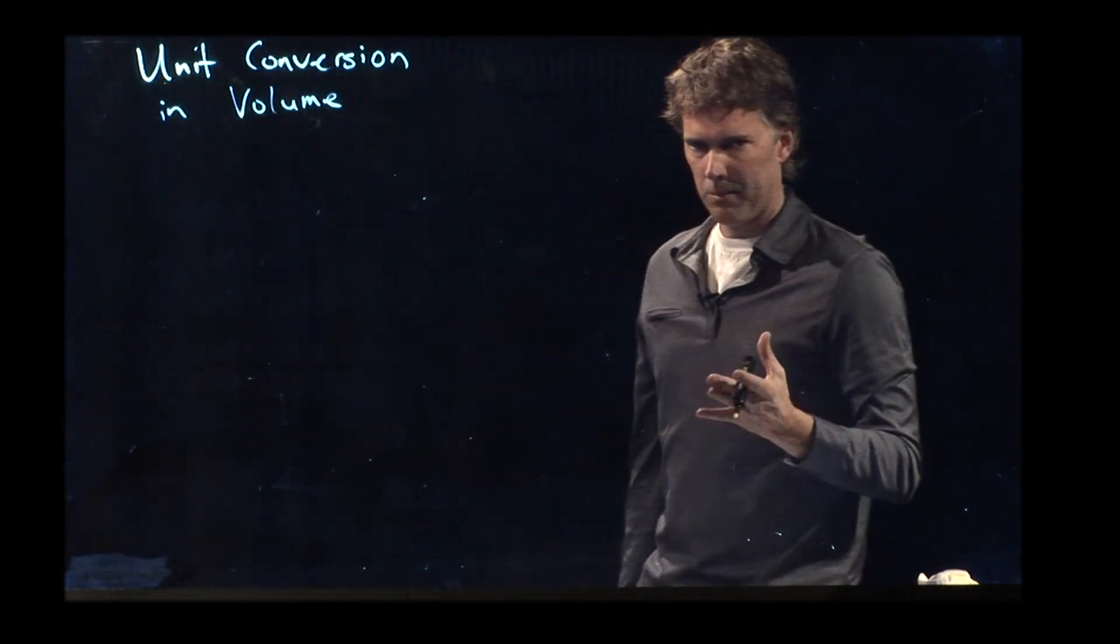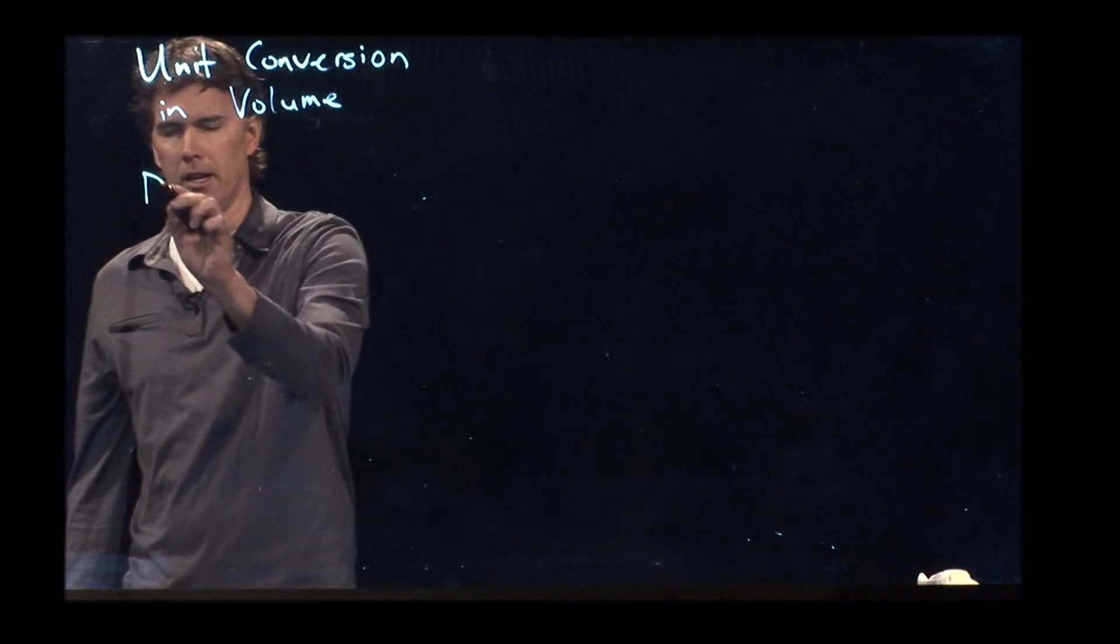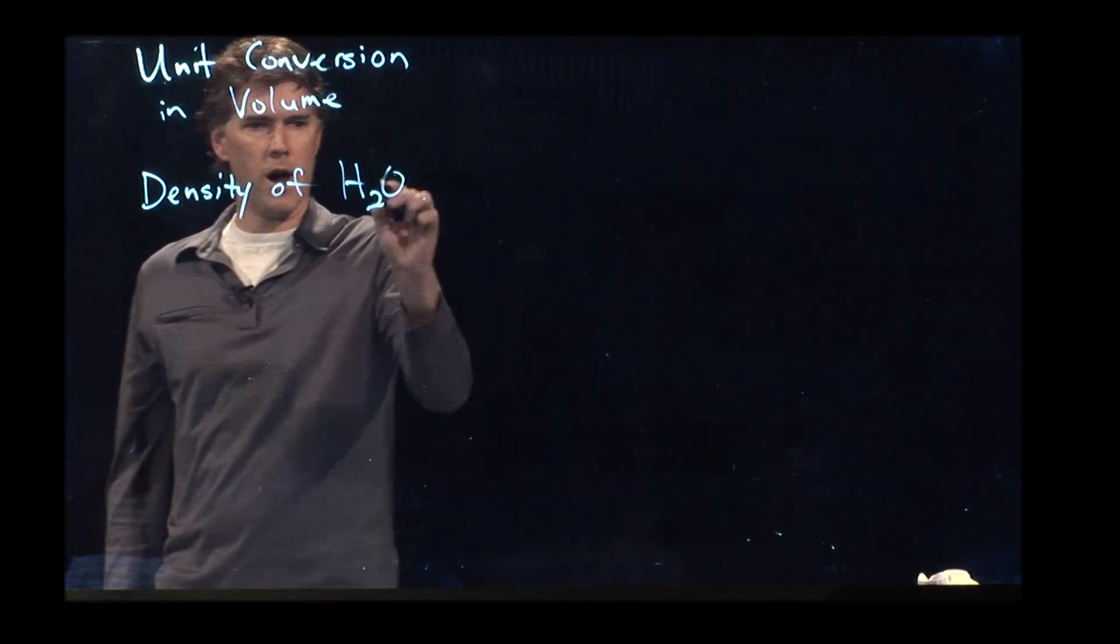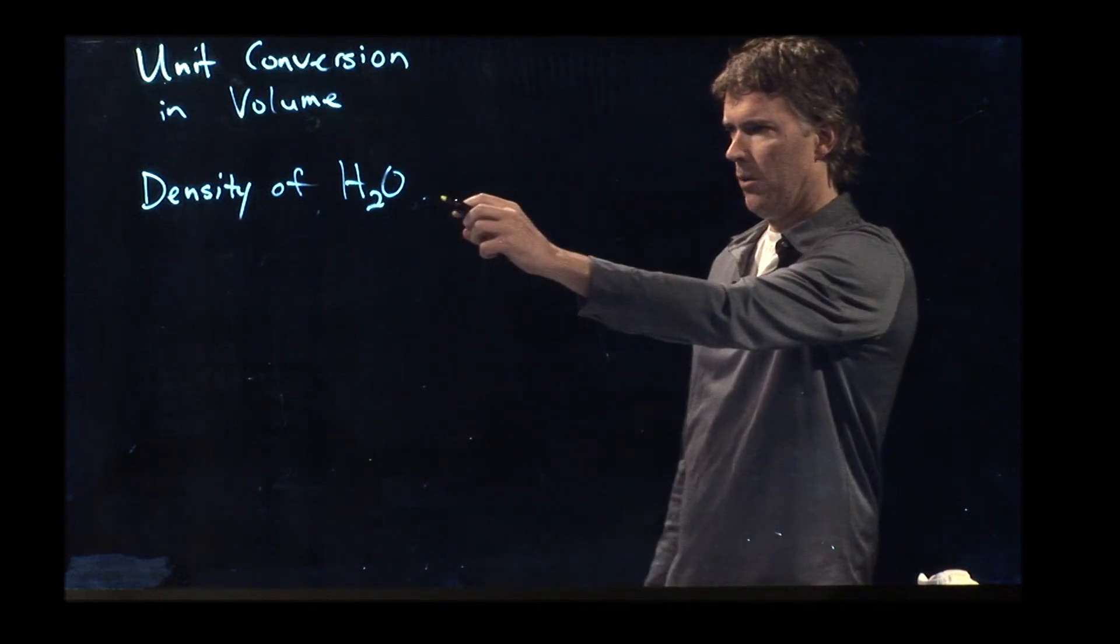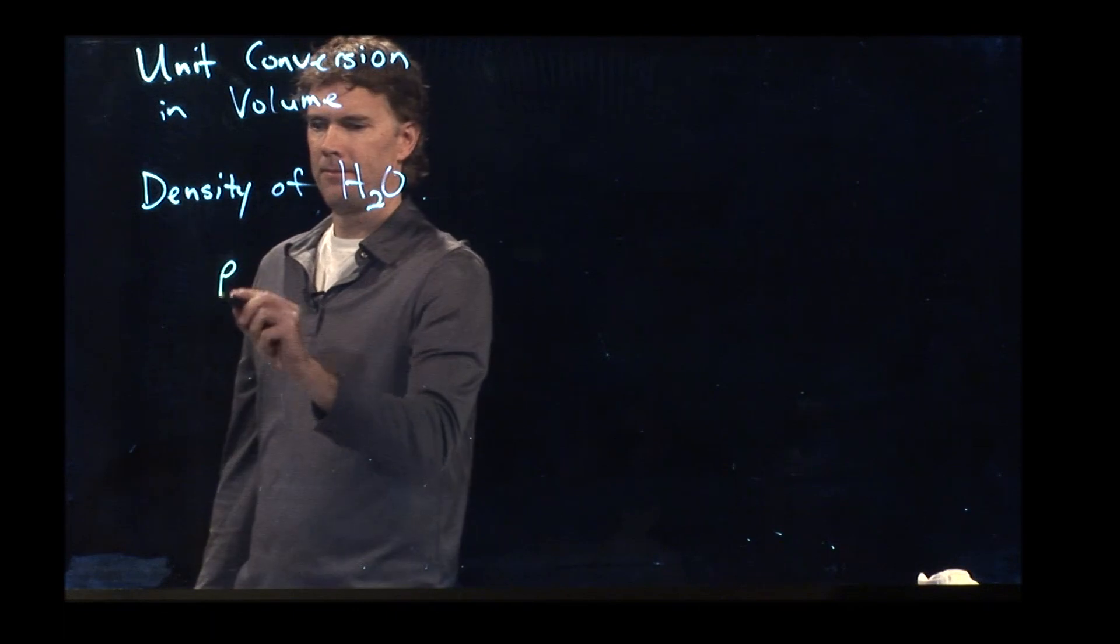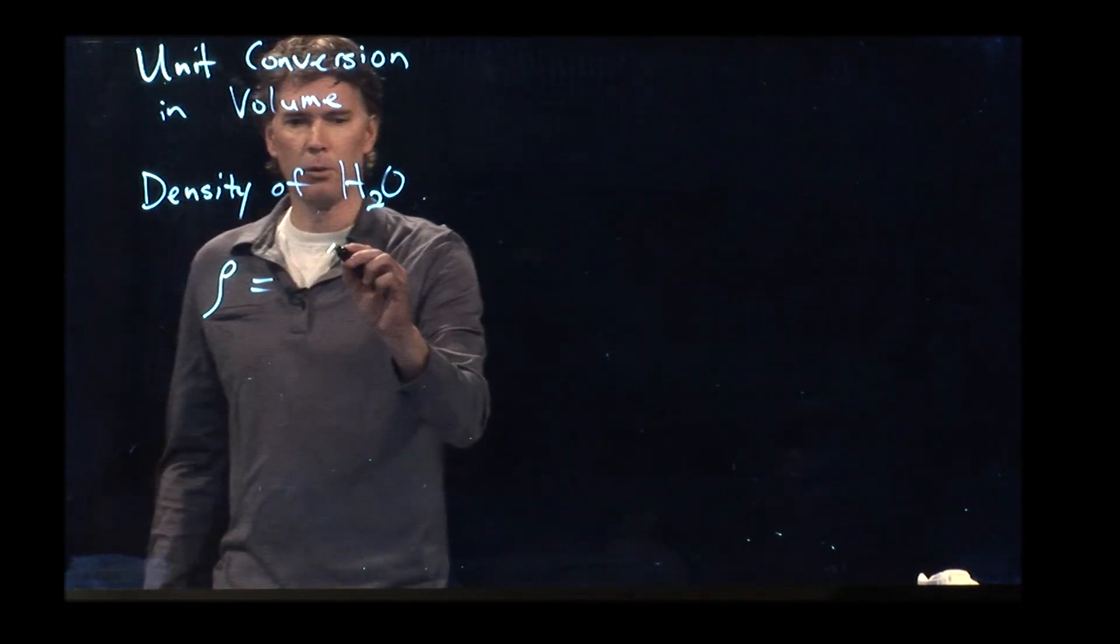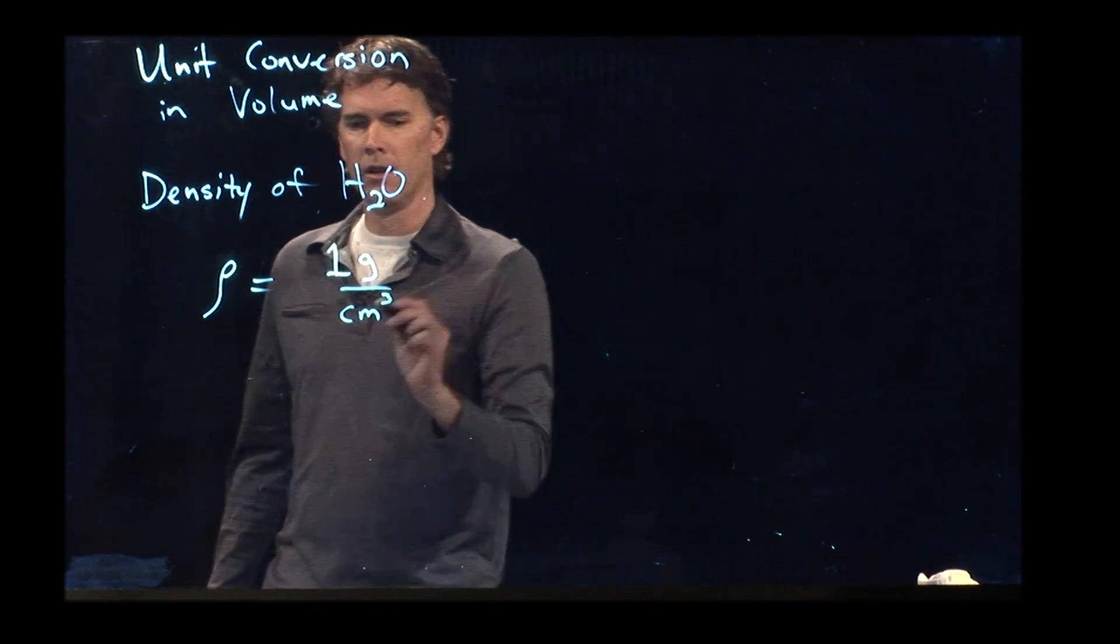Let's say we are looking at the density of water. Water is also known as dihydrogen oxide. What is the density of water? It is one gram per cubic centimeter.